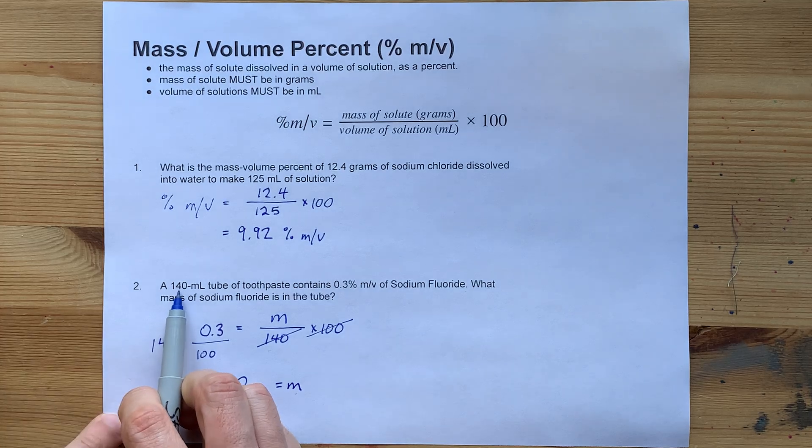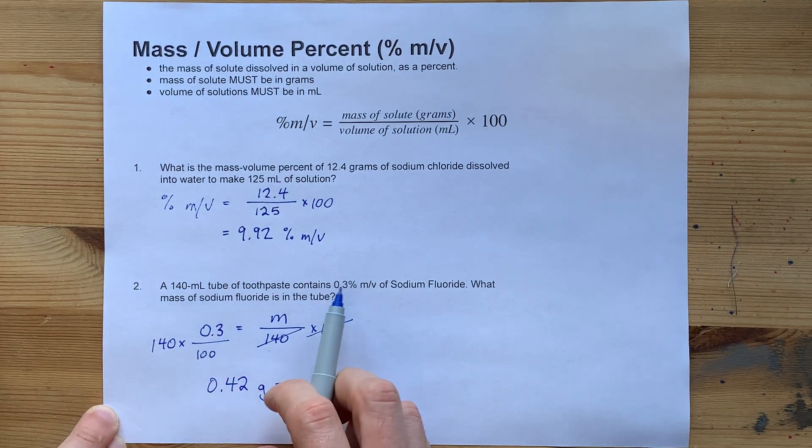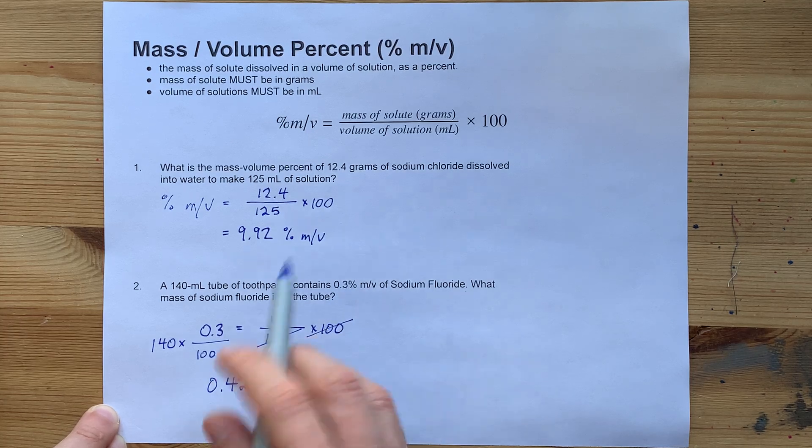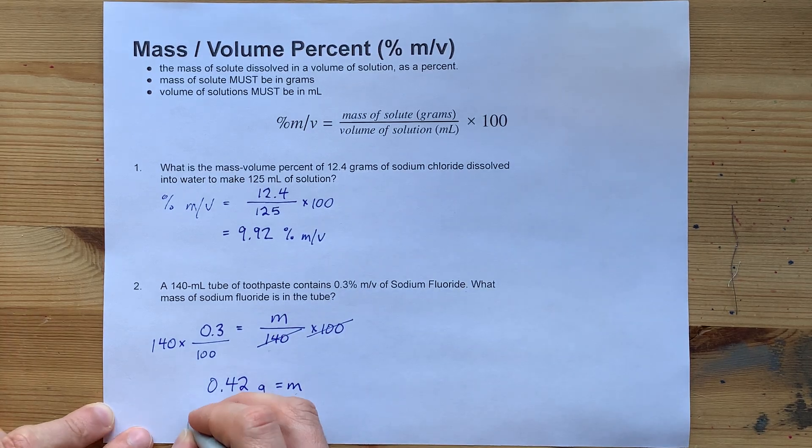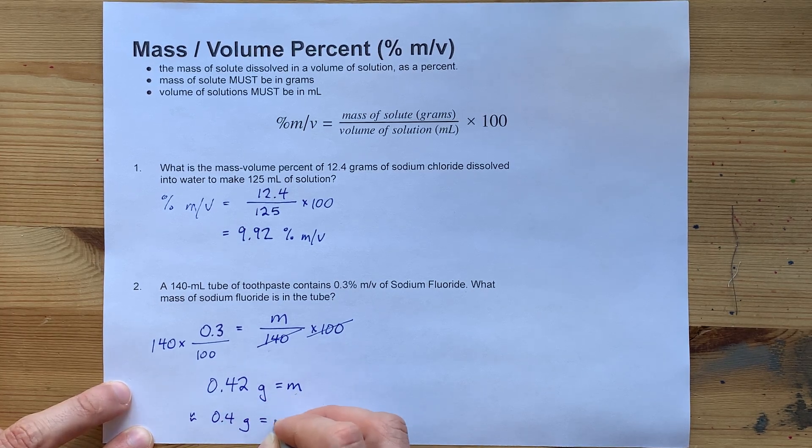Now, this number has two significant figures because there's no decimal point after the 140. This one only has one significant figure, so if your teacher cares about those, you'd have to write 0.4 grams instead.